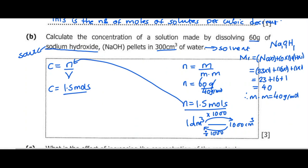So 300 cubic centimeters divided by 1000 gives us 0.3 decimeters cubed for the volume.